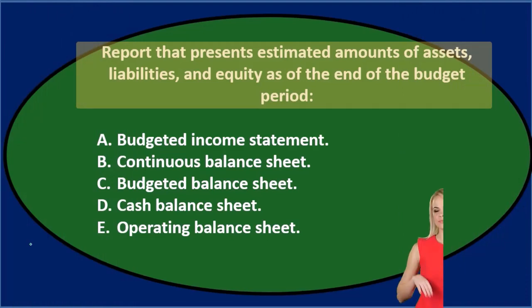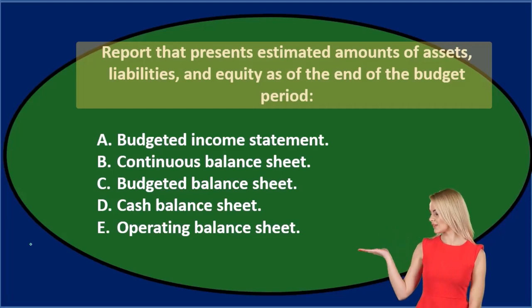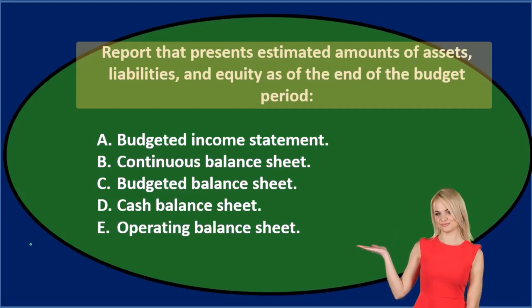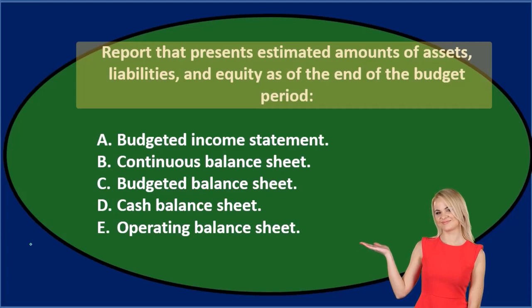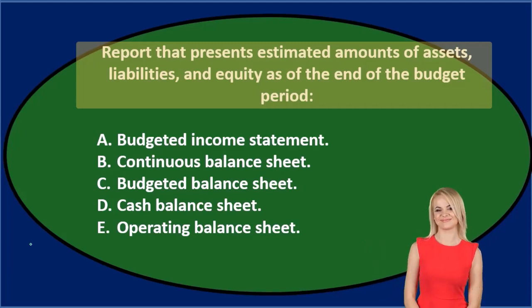Budgeted financial statements still have the same concept, because now we're budgeting on either the balance sheet or the income statement. We're still finishing off with the financials — the balance sheet and the income statement — but now they are the budgeted balance sheet and income statement. So that's what we would expect here.